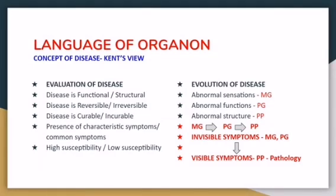High susceptibility is indicated on one side and low susceptibility on the other. Regarding the evolution of disease, the disease evolves first as abnormal sensations in mental generals and physical generals, which then give rise to abnormal physical particulars and further develop into abnormal structure — microscopic or macroscopic changes in the organs.